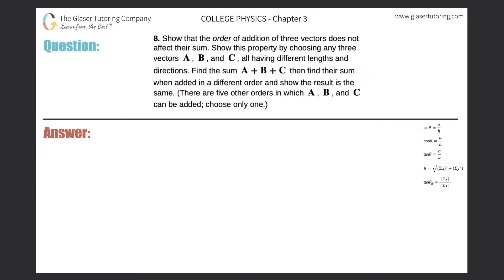Number eight: show that the order of addition of three vectors does not affect their sum. Show this property by choosing any three vectors, all having different lengths and directions. So let's just make three vectors up.